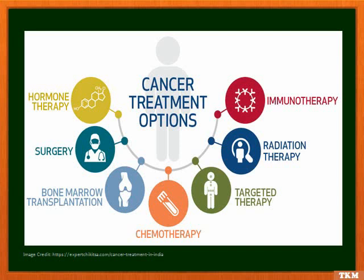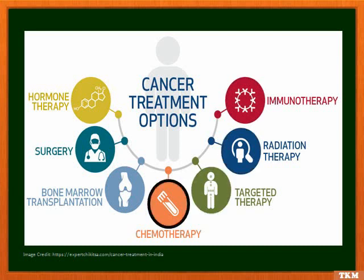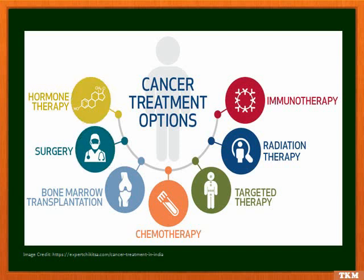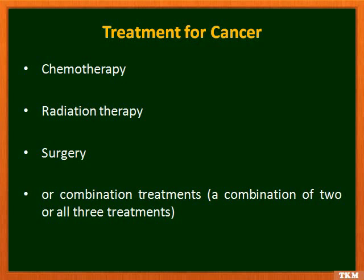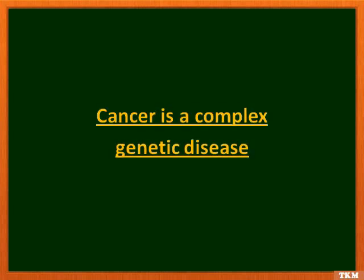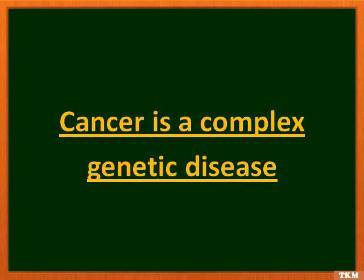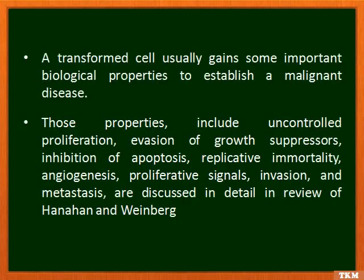There are several cancer treatment options, including immunotherapy, radiation therapy, targeted therapy, chemotherapy, bone marrow transplantation, surgery, and hormone therapy. The widely used treatments are chemotherapy, radiation therapy, and surgery — most of the time as a combination. One key point is that cancer is a complex genetic disease in which more than one gene is involved.